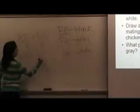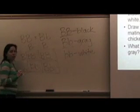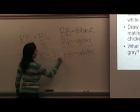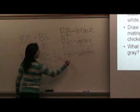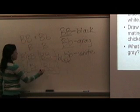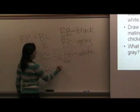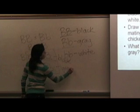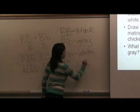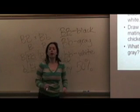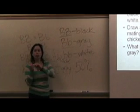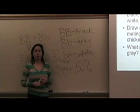These two are homozygous dominant, so they are both going to be black, so that's not gray. These two, however, are gray, right? They're both heterozygous. So, our answer would be 50% of the offspring are gray. Good luck with your incomplete dominance Punnett squares.